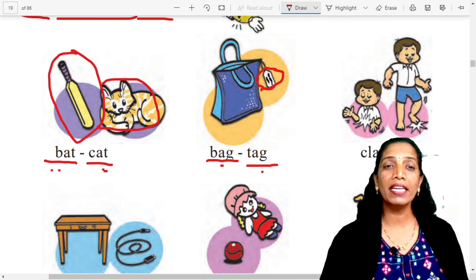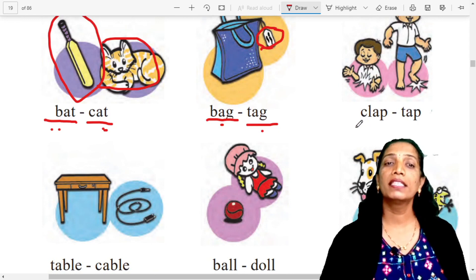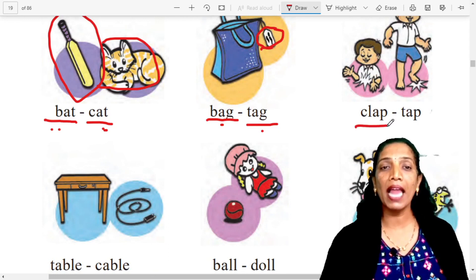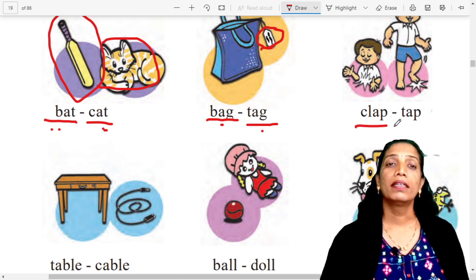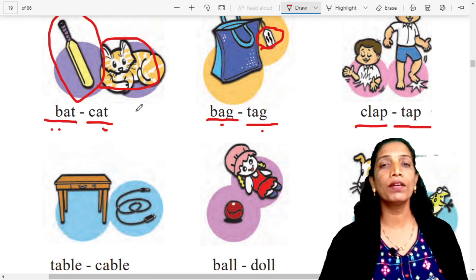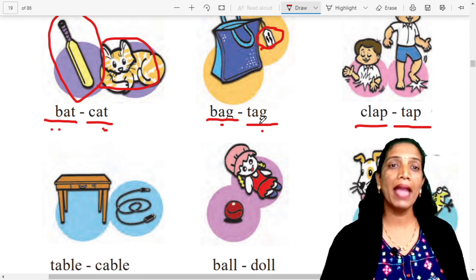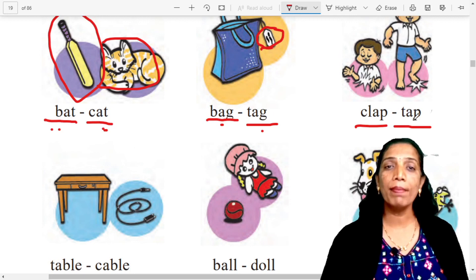Students, what do you do? Clap. How student, what do you do? Tap. Okay? Clap, spelling. C-L-A-P, clap. Clap. C-L-A-P, clap. T-A-P, tap. Clap, tap. Clap, tap. Very good. Bat, cat. Bag, tag. Clap, tap. Very good.